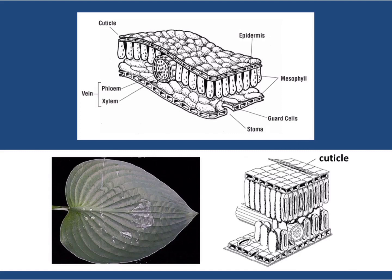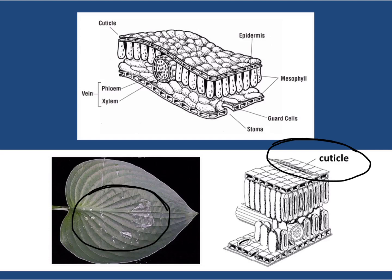The cells in the epidermis also produce a thin, waxy coating called the cuticle. This cuticle is along the outside of the plant and it helps to prevent water loss because water will not pass through that waxy coating.